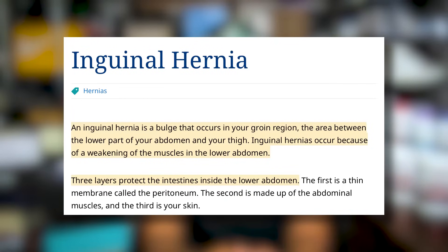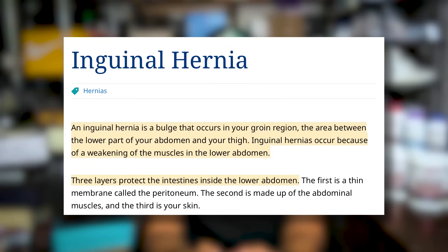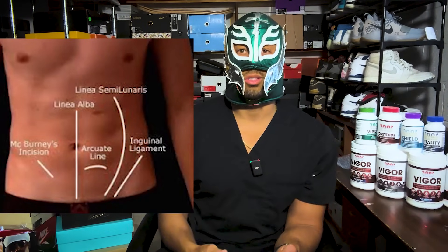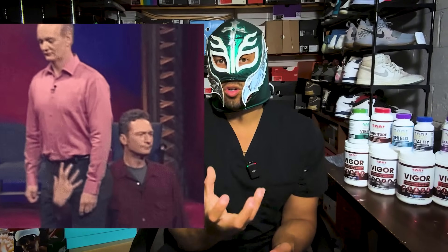Men often get inguinal hernias because the processus vaginalis — which had to open to allow the testicles to drop through — sometimes remains a little open. A small piece of intestine can travel from the abdomen down into the scrotum, especially with increased intra-abdominal pressure. That's why during a physical a doctor asks you to turn your head and cough — when you cough you increase intra-abdominal pressure, and if there is a hernia it will come down and can be felt with a finger in the processus vaginalis.